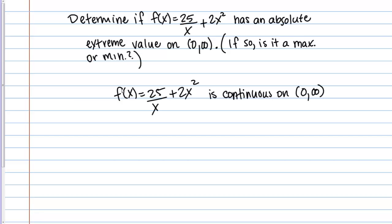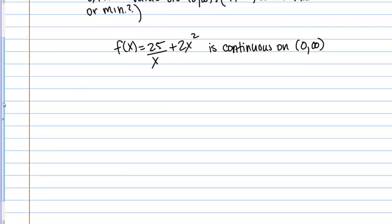So what do we want to do next? Well, the theorem involves critical points, or local extrema. So we want to figure out if this function has any local extrema. So to do that, we need to take the derivative. So I'm going to start by rewriting this as 25x⁻¹ + 2x², and then we can take the derivative.